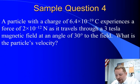Another one, we have a particle with the charge of 6.4 times 10 to the minus 19 coulombs, and it experiences a force of 2 times 10 to the minus 12 newtons, as it travels through a 3 tesla magnetic field at an angle of 30 degrees to the field. Find the particle's velocity.